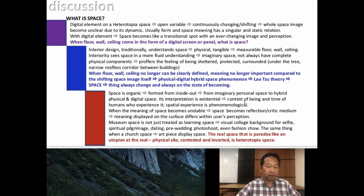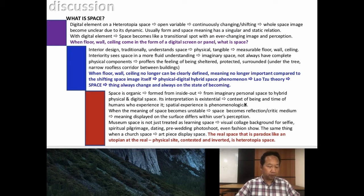In the discussion: digital elements in heterotopia space take part as a variable delivering a continuously changing or shifting image that causes the whole image of space to become unclear due to its dynamic nature. With the digital element, the image of space becomes contemporary and so does the perception it generates. What if the door, wall, and ceiling elements can no longer be clearly defined — when meaning no longer becomes important compared to the shifting space image itself?